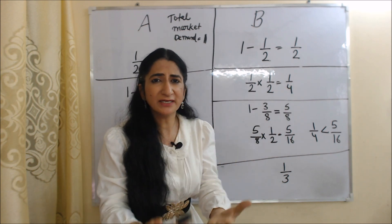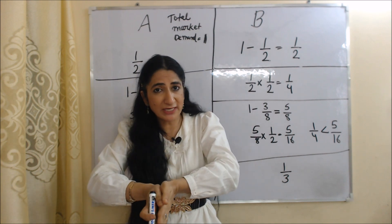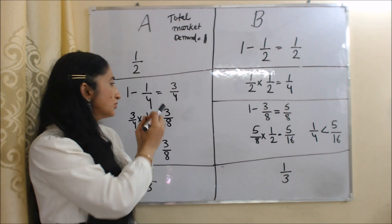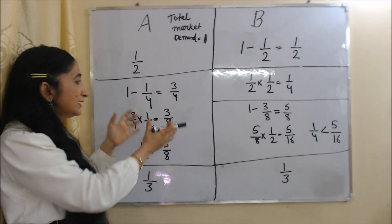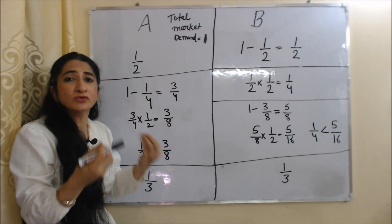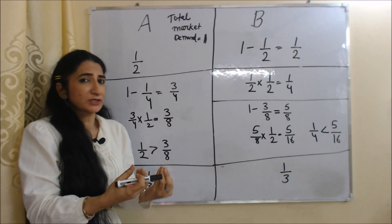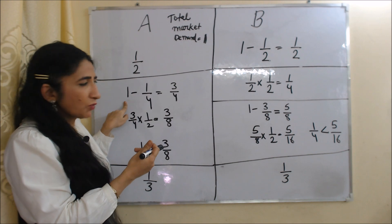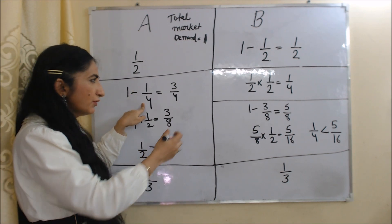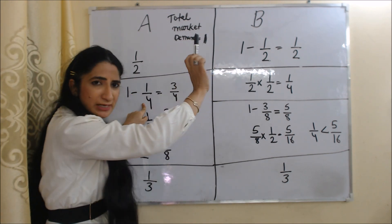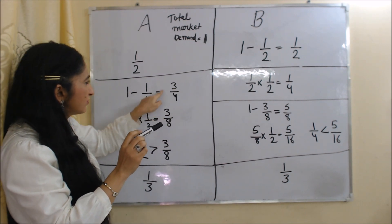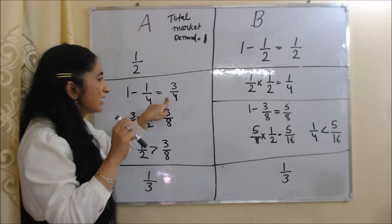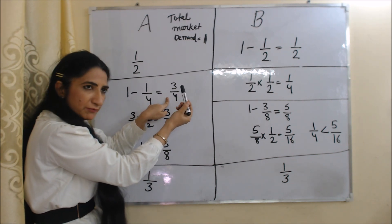As B increases production, supply increases but demand is constant. As a result, price and profit fall. So in order to increase profit, A decides to reduce production and plans from the start. Initially total market demand was 1, and B is already producing 1/4, so 1 minus 1/4 equals 3/4. Available market demand is now 3/4.